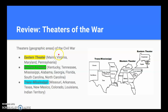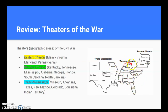In the Eastern Theater, we have mainly Pennsylvania, Virginia, and Maryland. The Western Theater covers a large area: Kentucky, Tennessee, Mississippi, Alabama, Georgia, Florida, South Carolina, and North Carolina. This is called the Western Theater even though it's still in the eastern part of the United States.